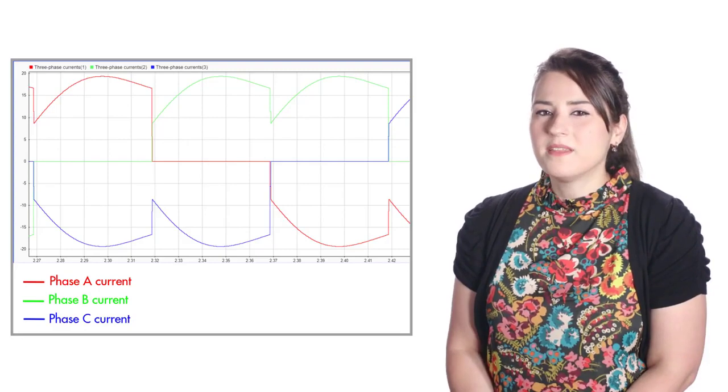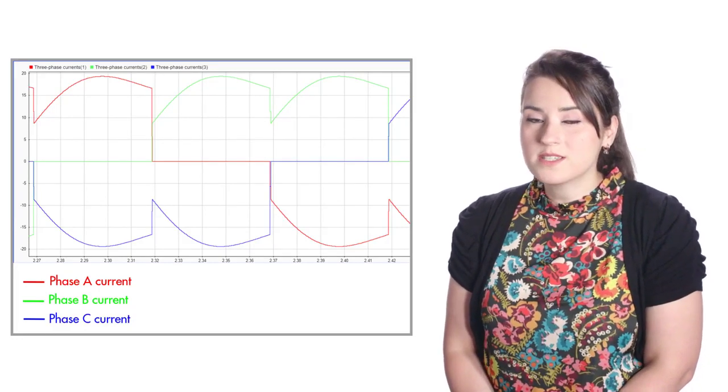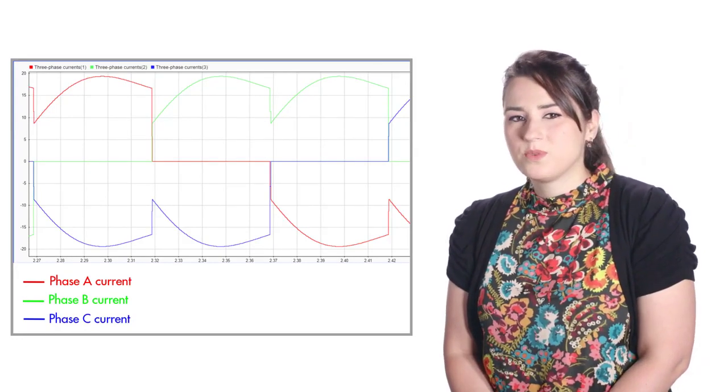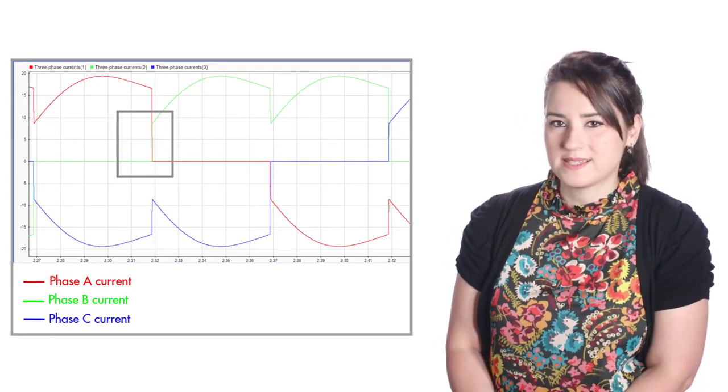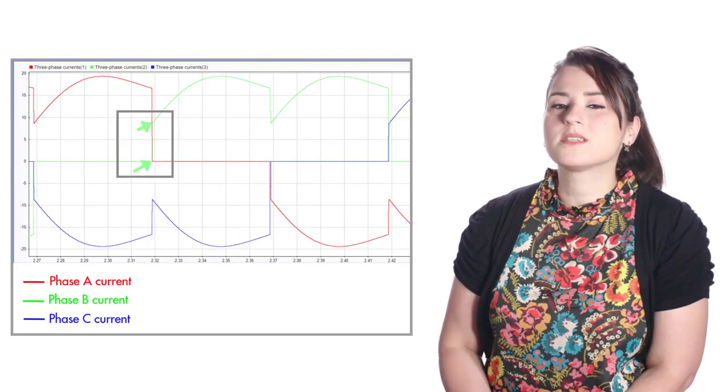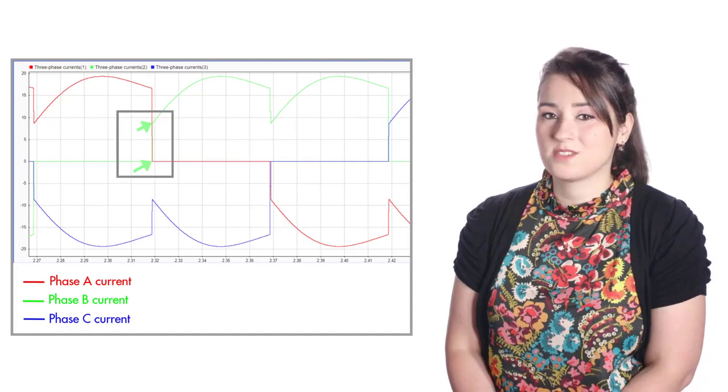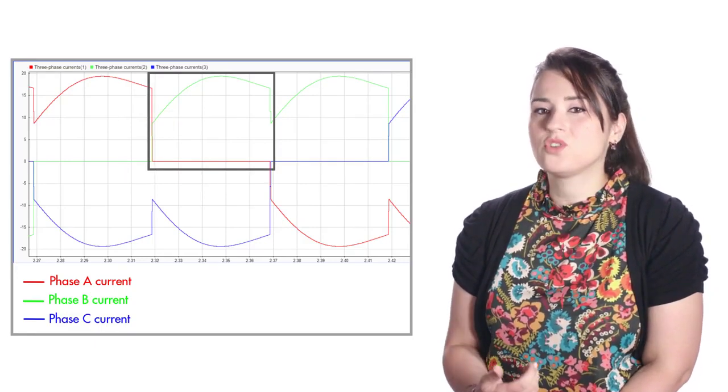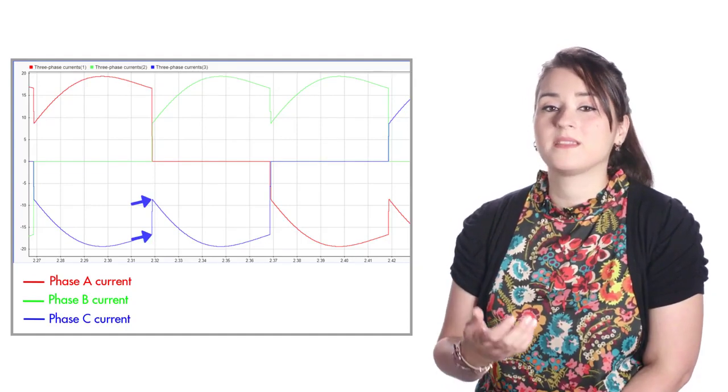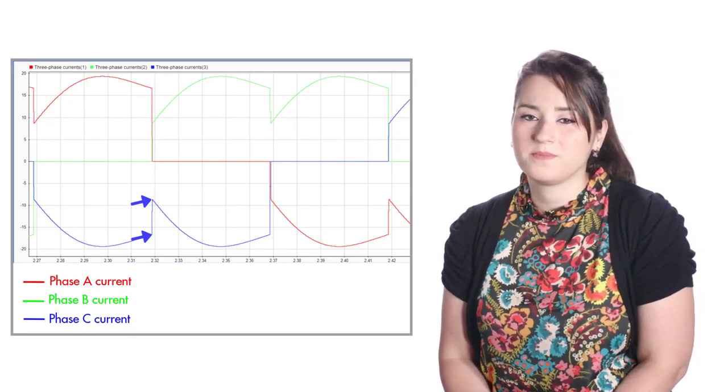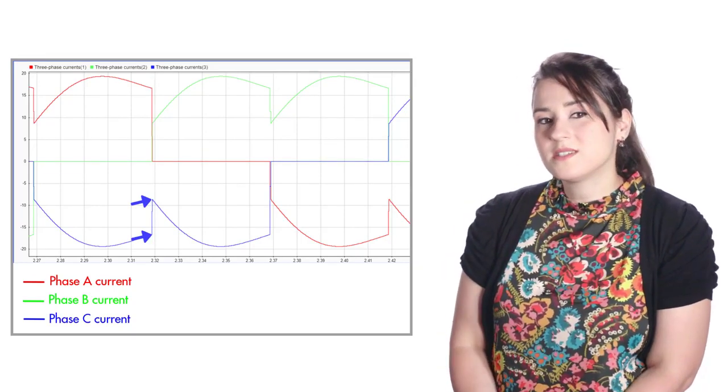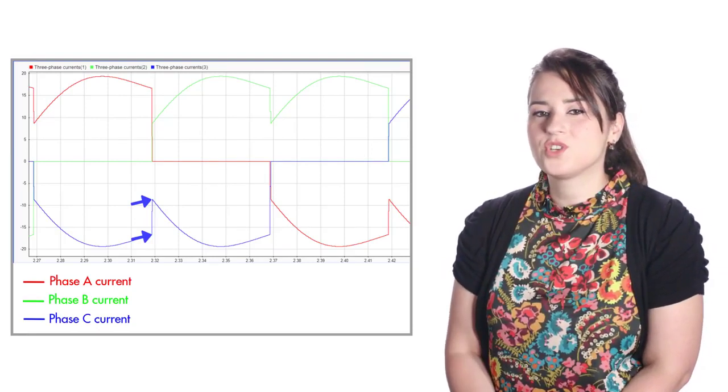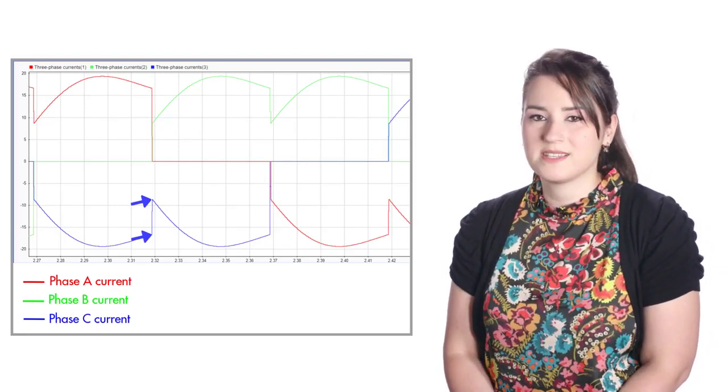Did something catch your eye when we looked at the three phase currents? When a phase is pulled high from an open phase state, a sudden jump occurs in the phase current before it starts to rise again. At the same time, another jump occurs in the phase that's been kept low during commutation. To better understand the reason behind these instantaneous changes in the energized phases, let's look at this animation.